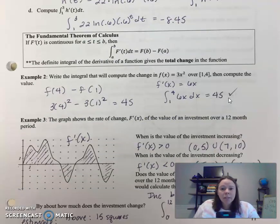So let's do another example to demonstrate it. So write the integral that will compute the change in this function over 1 to 4, then compute the value. So we found, that's what we first did, we found the change in the value. So we plugged in f of 4, then minus f of 1, and got 45.